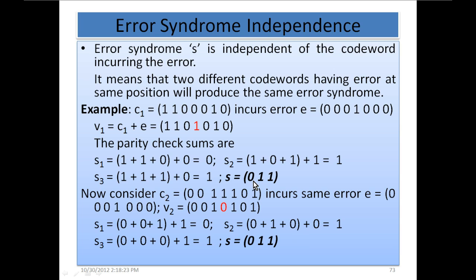When we go through the syndrome table, which maps each syndrome to an error location, we will know where the error has occurred. As you can see, error occurred at bit number 4 for this codeword, and the result we get is 0, 1, 1, which indicates the error occurred at that location.